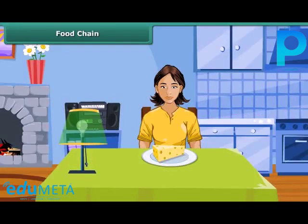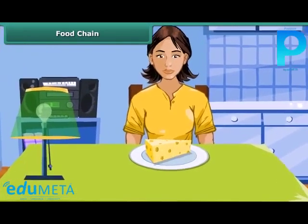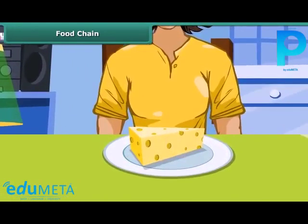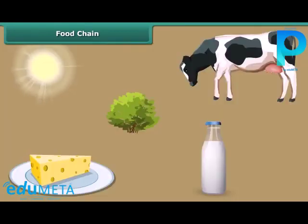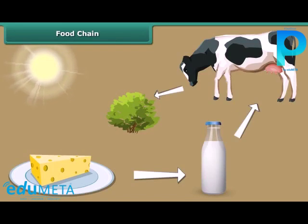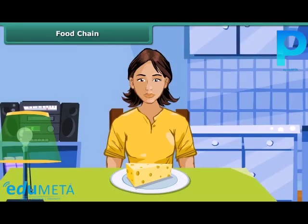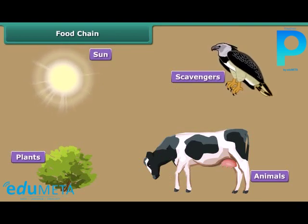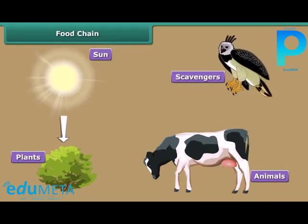It is breakfast time. Rhea is relishing a cheese cube. She decides to trace the cube back to the place from where it originated. The cheese cube comes from milk, and the milk from the cow. The cow eats plants, and plants produce their food with the help of sunlight. Rhea just traced the food chain. The food chain is an arrangement in which energy passes from one organism to another. The main constituents of the food chain are the sun, the plants, the animals, and the scavengers.